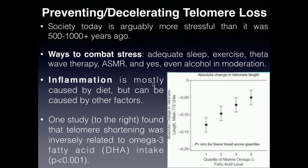Regarding inflammation, one study looked at the amount of omega-3 fatty acids taken in. Fatty acids like DHA and EPA are strongly anti-inflammatory, particularly DHA, and I highly recommend taking a DHA supplement. What they found is that the amount of DHA taken was inversely proportional to the shortening of the telomeres — the more DHA and omega-3s you took, the slower your telomeres were shortening. Anti-inflammatories such as omega-3s, DHA, and vitamins C, A, and D will actually slow the shortening of your telomeres.